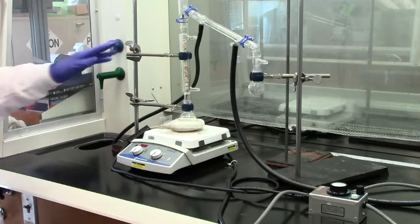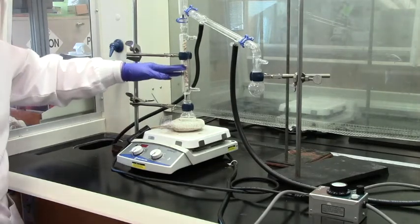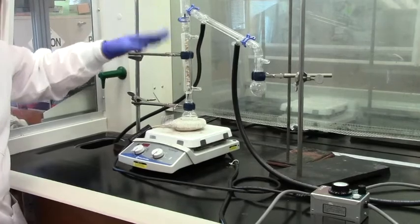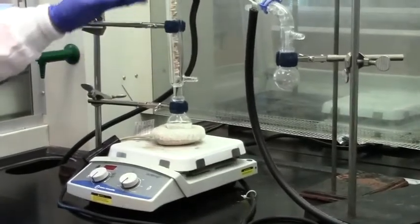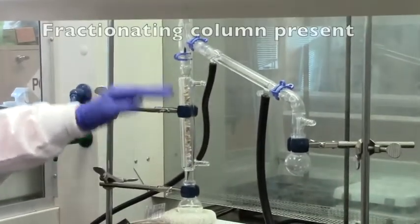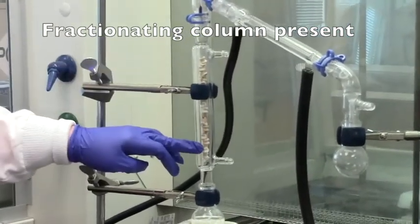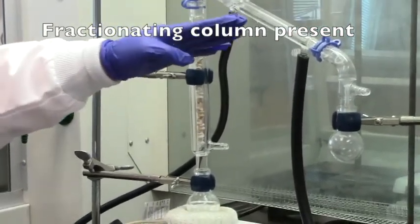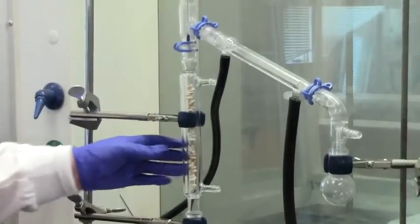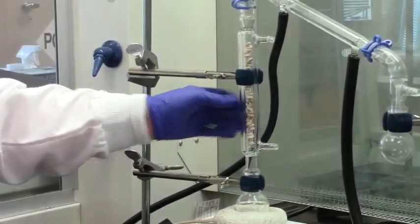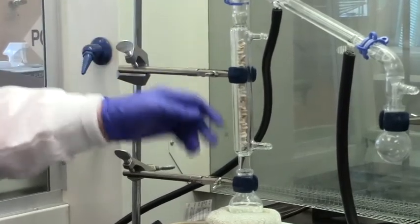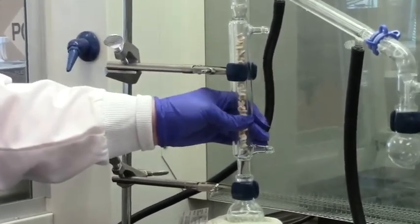So if you notice what's different between this apparatus and the one we did for simple distillation is the presence of this what we call the fractionating column. And the fractionating column looks very similar to a regular condenser except it's typically larger. And the hollow tube inside can certainly be larger as well.